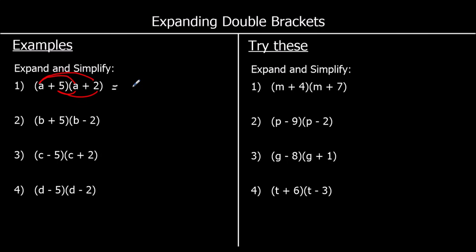Let's get started. a times a we can write as a squared — a number times itself is squared. Then we've got a times two, which we write as 2a — we always put the number before the letter, and they're both positive so it's plus 2a. Now five times a we write as 5a, and again it's positive so we write plus 5a. And five times two is ten, positive again, so plus ten.